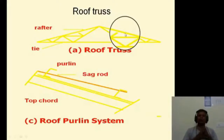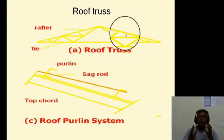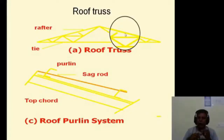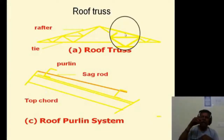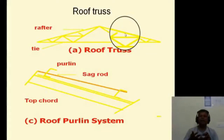The basic assumption is that loads act at the joints, and we need to find the axial forces in all members — tension or compression. The top chord member will be designed for both axial forces and bending stresses. All other members are designed for member forces — axial tension or compression.